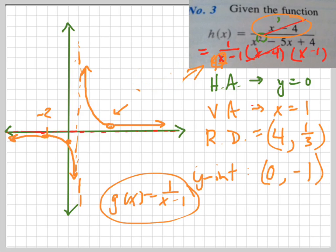That hole, as we found, is at (4, 1/3). That's how you graph a rational function with a removable discontinuity.